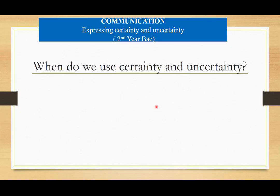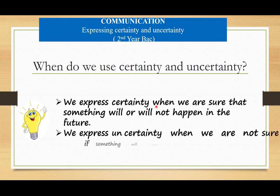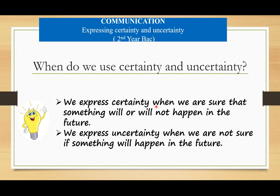When do we use certainty and uncertainty? We express certainty when we are sure that something will or will not happen in the future. We express uncertainty when we are not sure if something will happen in the future. So, certainty is when we are sure something will happen, and uncertainty is when we are not sure something is going to happen.